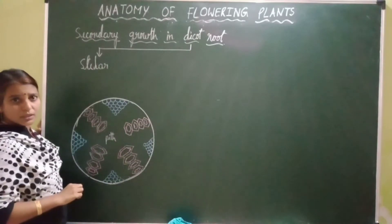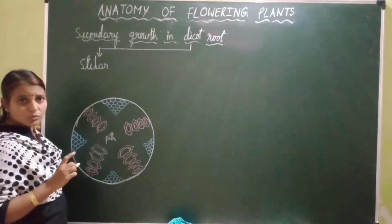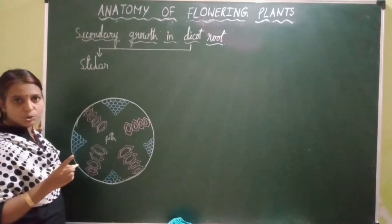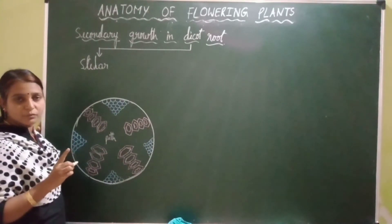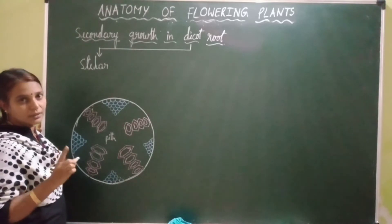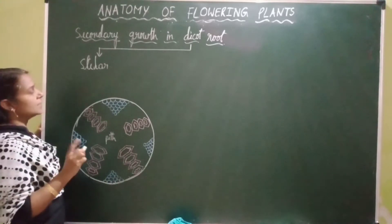We know what the stele is. The stele includes pericycle, vascular tissues — that is xylem, phloem — and pith.